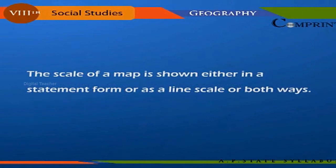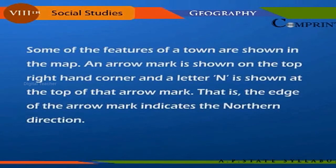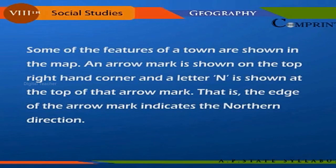The scale of a map is shown either in a statement form or as a line scale, or both ways. Some features of a town are shown in a map. An arrow mark is shown on the top right-hand corner, and the letter N is shown at the top of that arrow mark — the tip of the arrow mark indicates the northern direction.